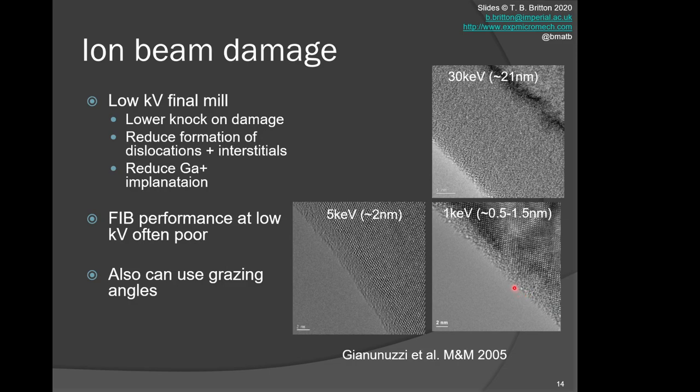If you think that you want your TEM foil to be 20 to 80 nanometers, that means this is a significant fraction—one-twentieth to one-eightieth of your thickness. In this example, it's like half your foil thickness, and considering it's two sides of the foil, it could be a significant volume where you have amorphized the material due to poor sample preparation.